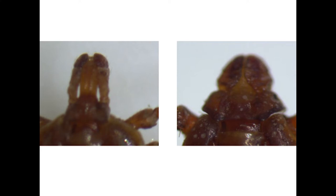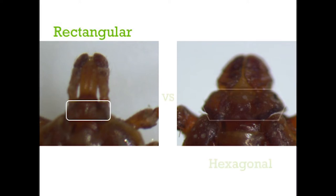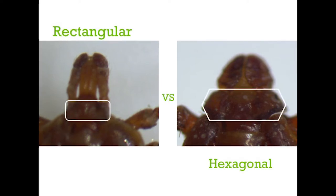But if you can, some species have a rectangular basis capituli, as shown on the left. And one species of interest to us has a hexagonal-shaped basis capituli, which is shown on the right.